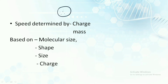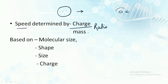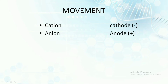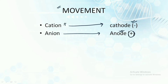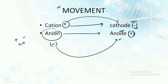The various molecules move at different speeds, and this speed is determined by the charge-to-mass ratio — what is the charge and what is the mass of that particular molecule. It is also based upon the molecular size, shape, and charge of the molecules. Regarding movement: cations, which are positively charged, move towards the cathode which is negatively charged, and anions, which are negatively charged, move towards the positively charged anode.